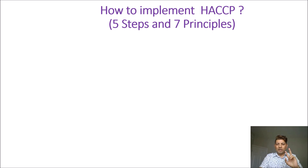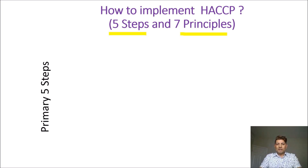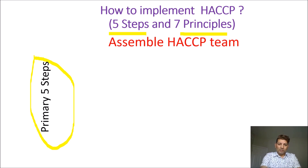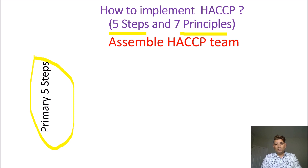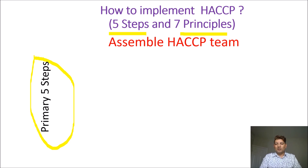HACCP has five preliminary steps and seven principles. The first of the preliminary steps is building a team. We have to form a team before working on HACCP. This team should be multidisciplinary, representing different departments and knowledge areas. An ideal team could include one person from quality control, one from production, one from R&D, one from marketing and sales, and one from management. This depends on the size of your organization.